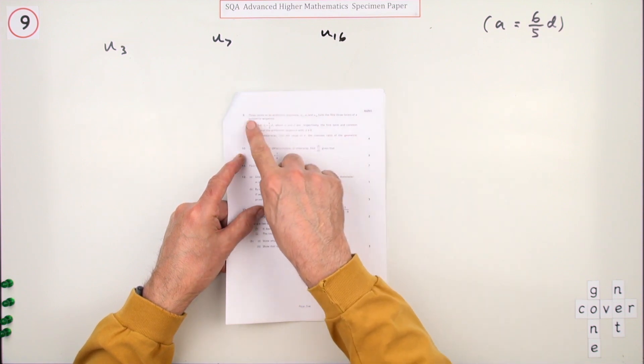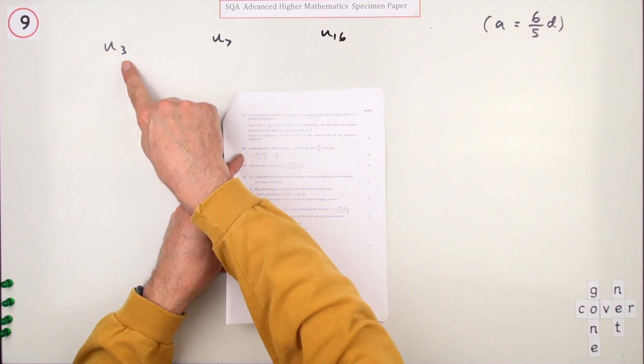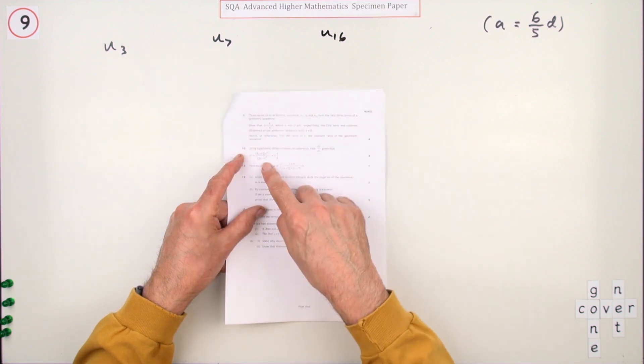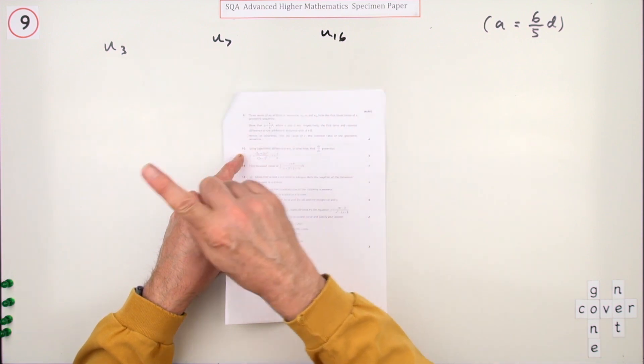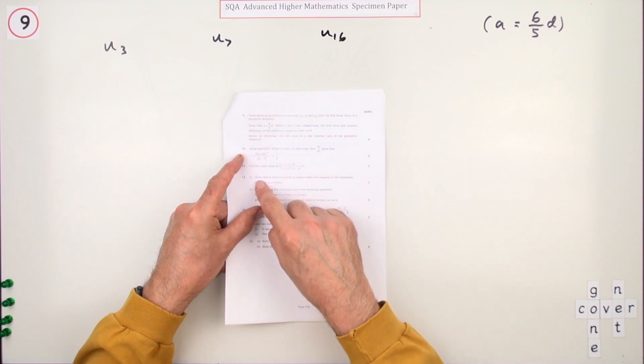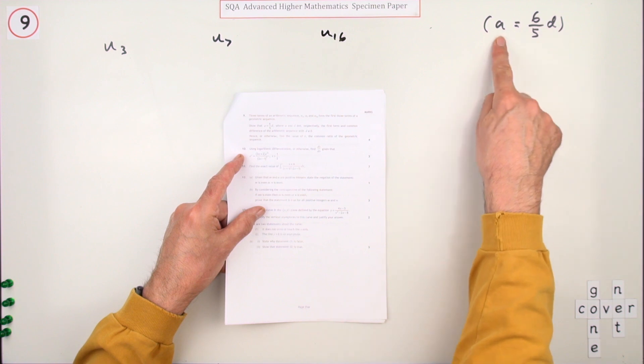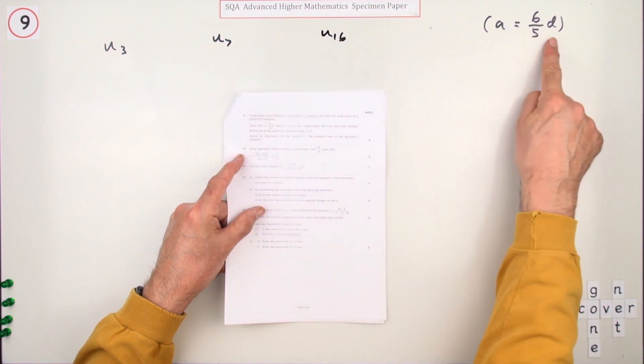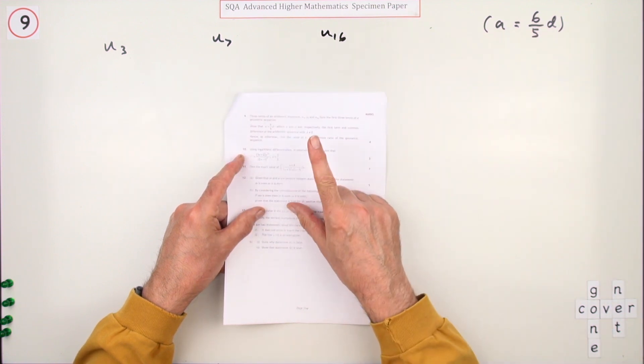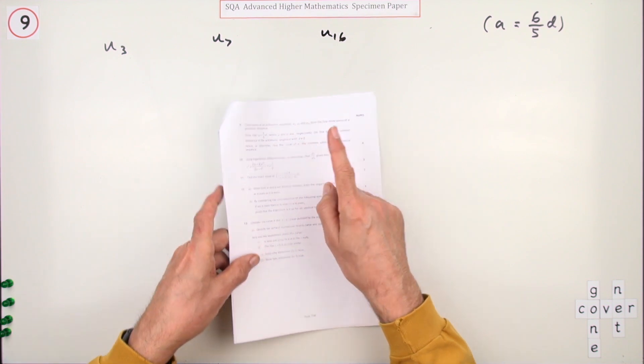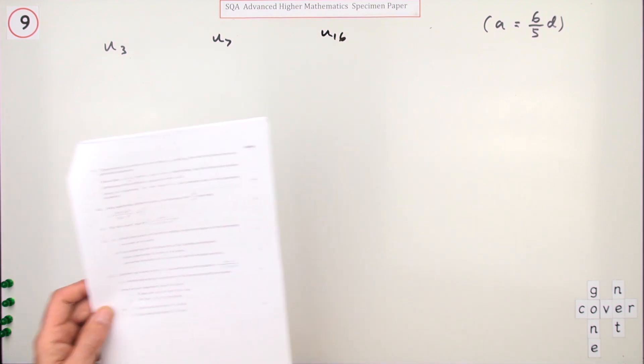What does it say? Three terms, not the first three, three terms of an arithmetic sequence, the third, seventh, and sixteenth, form the first three terms of a geometric sequence. Show that a equals six-fifths of d, a being the first term and d being the common difference, and hence find the common ratio of the corresponding geometric sequence.